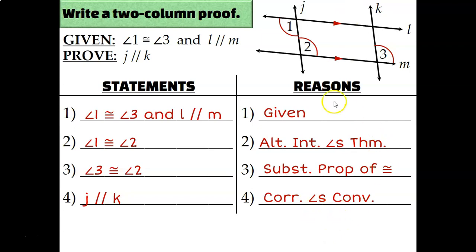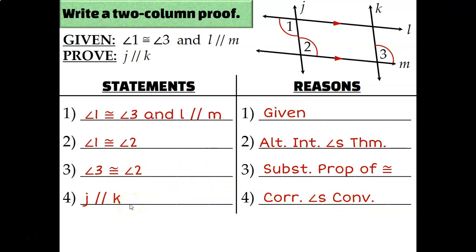In this proof we used one theorem and one converse. Theorems are what you use if you know you have parallel lines and you're proving things about the angles — we knew L and M were parallel and concluded angles 1 and 2 must be congruent. Converses are for the opposite: if you know things about the angles, like that angle 2 and angle 3 were congruent, then you can conclude you have parallel lines. Be careful about which one you use.